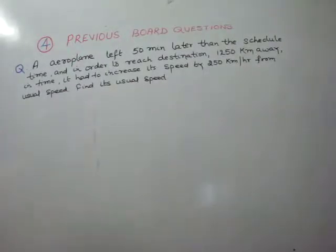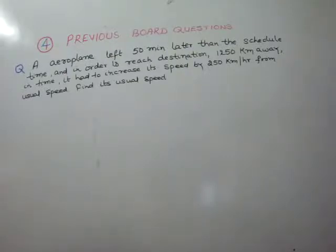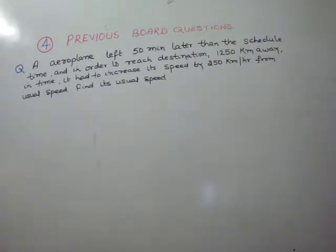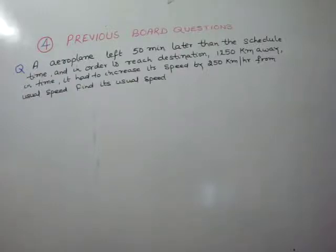Your question is: an aeroplane left 50 minutes later than the scheduled time, and in order to reach its destination 1250 km away in time, it had to increase its speed by 250 km per hour from its usual speed. Find its usual speed.